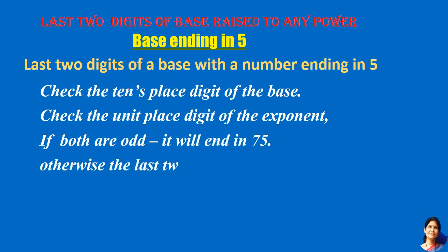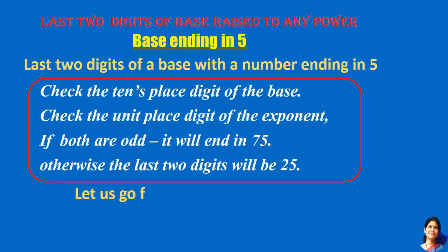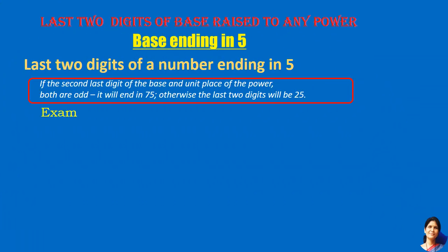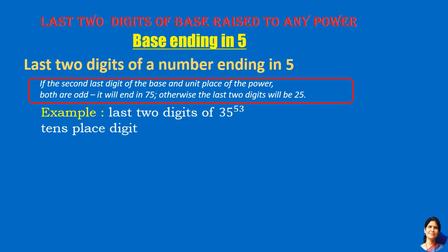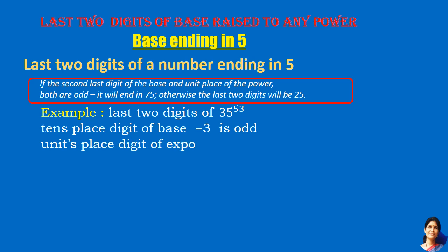Let us go through some examples. Take 35 raised to the power 53. The tens place digit of the base is 3, which is odd. The units place digit of the exponent is also 3, which is odd. So both are odd, and the last two digits will be 75.